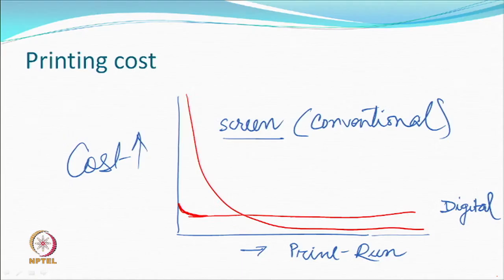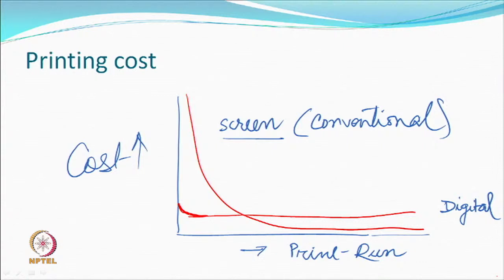Today, if you have smaller print runs — 100 meters, 500 meters — inkjet is still cheaper. But for long runs of 1,000, 5,000, or 10,000 meters or more, conventional screen printing may be cheaper, because the investment made to prepare designs, screens, and storage becomes compensated. The cost of a digital printing system, meaning inkjet, is basically constant at this moment.